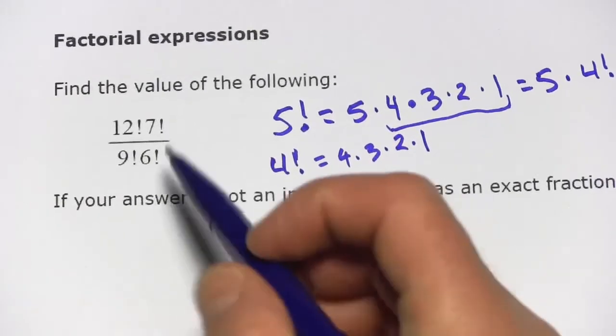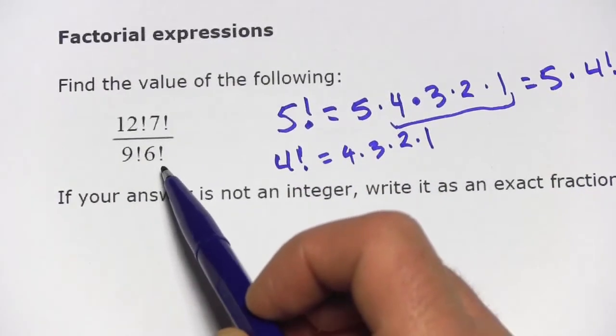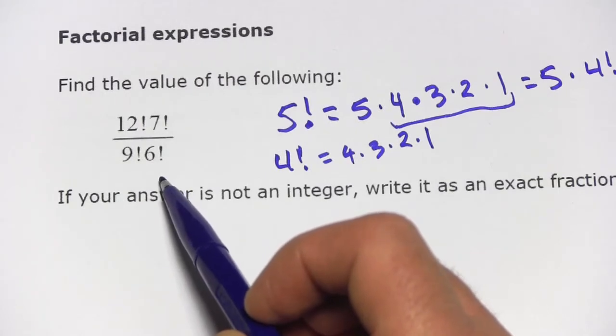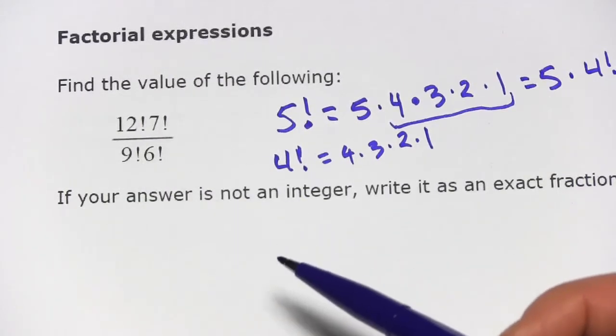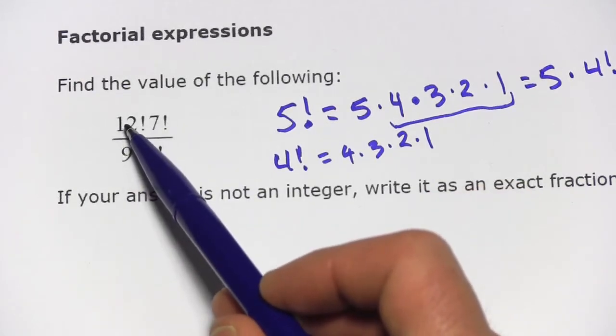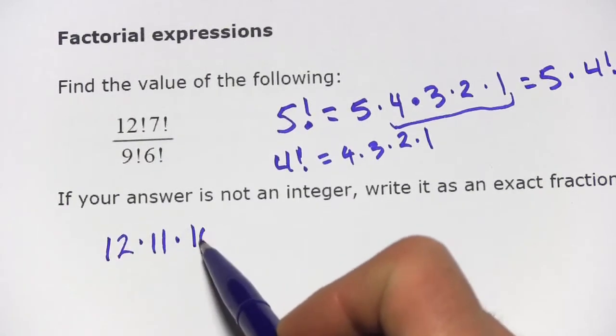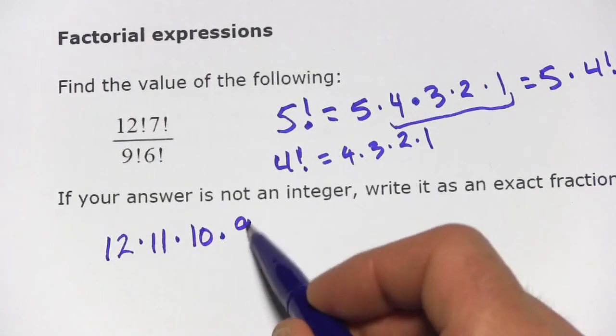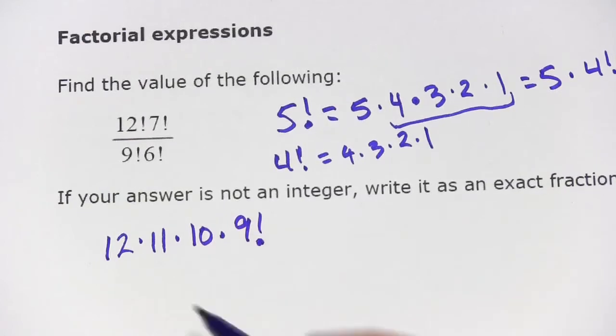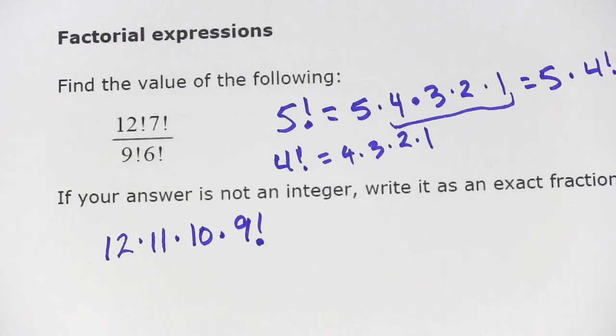Let's look at this first one. We've got 12 factorial times 7 factorial over 9 factorial times 6 factorial. So what I'd like to do is try to cancel out as much of this as I possibly can. I think what I'm going to do is write 12 factorial as 12 times 11 times 10 times 9 factorial. Because the rest of 12 factorial is 9 times 8 times 7 times 6, etc. And that's what 9 factorial is.